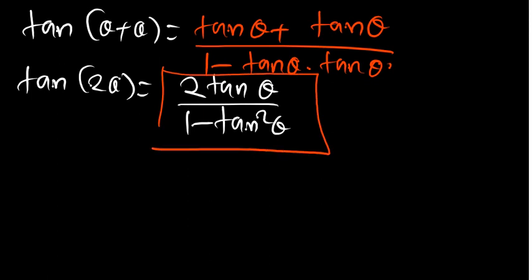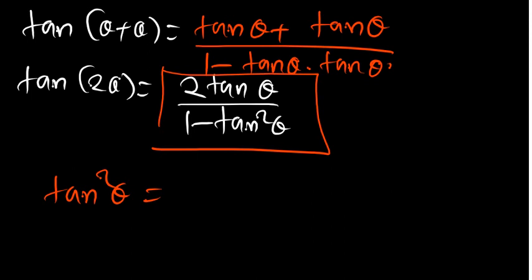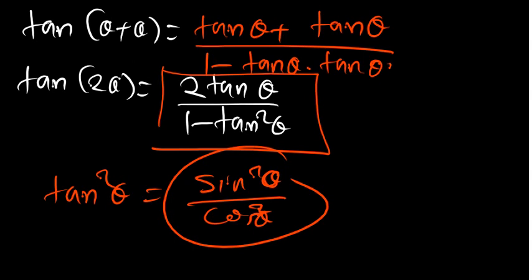In a case where you are trying to make tan squared theta the subject, or you know that tan equals sine over cosine. What you can do is take the formulas we just derived — put the sine formula on top and the cosine formula on the bottom — and you will see what you get. These are the sum and difference formulas which you have to know.